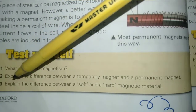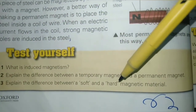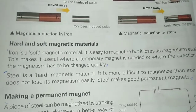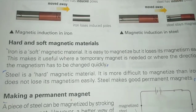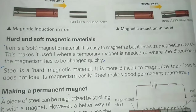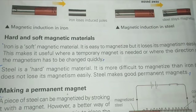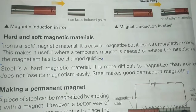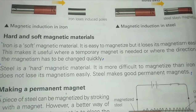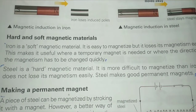Question 3: Explain the difference between a soft and a hard magnetic material. A soft magnetic material is easy to magnetize but it loses its magnetism easily — for example, iron. A hard magnetic material is difficult to magnetize but it does not lose its magnetism easily — for example, steel.